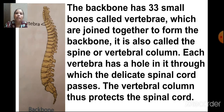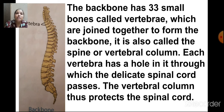The backbone is also known as the spinal column. The backbone has 33 small bones called vertebrae — vertebra is the singular form and vertebrae is the plural. These 33 vertebrae join together to form the backbone, also called the spine or vertebral column. Each vertebra has a hole in it through which the delicate spinal cord passes, and the vertebral column thus protects the spinal cord.